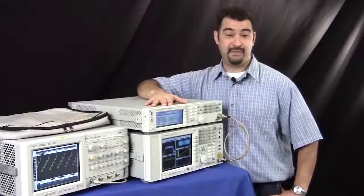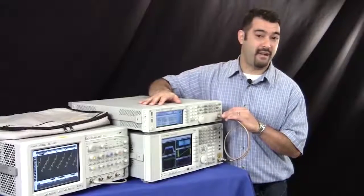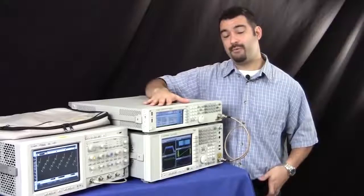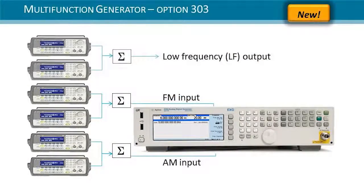So in our previous demo, what you saw was five function generators running simultaneously to generate a complex signal at RF. For our next demo, what we're going to be showing is our LF function generator out. In this case, we can actually have two additional function generators running out the rear panel LF.